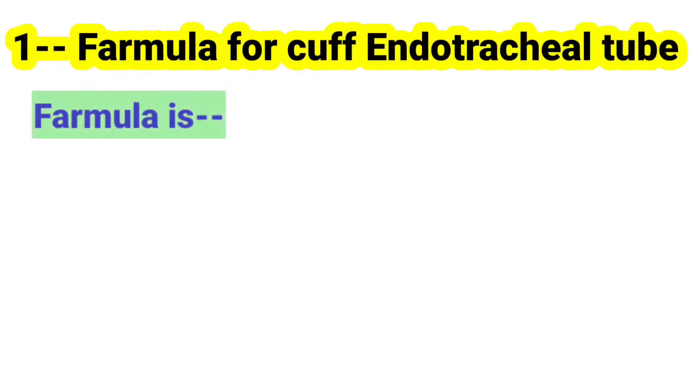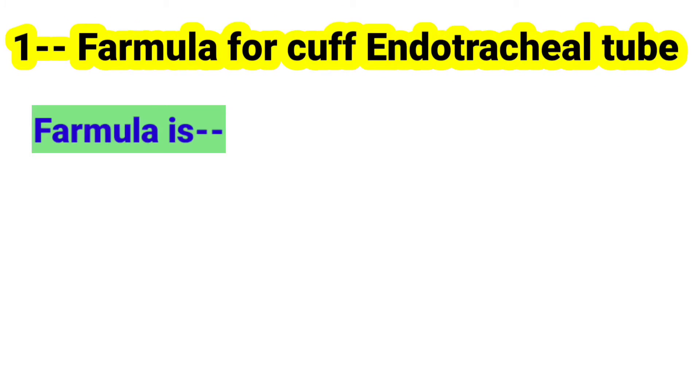The first formula is for cuffed endotracheal tube. The formula is: age in years divided by 4, then multiplied by 3.5.